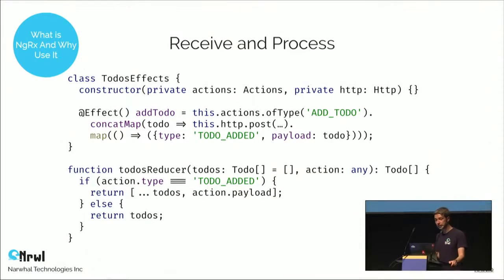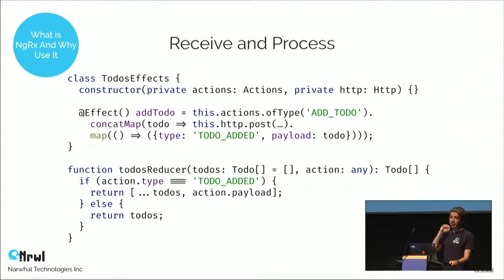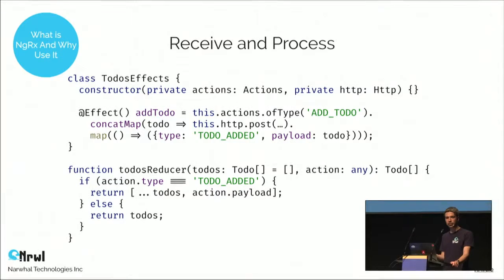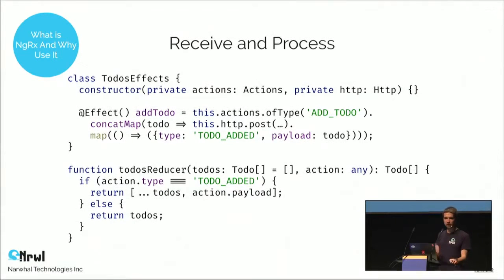Here's a simple example: when we receive a to-do, the effects class posts it to the back end to save it. Once saved, the effects class dispatches a new to-do-added event with a payload, and then the reducer will get that event and modify the local state. So a single interaction — adding a to-do — involves two actions: once the first action goes to the back end, the second one updates the local state.